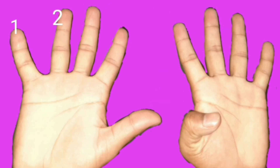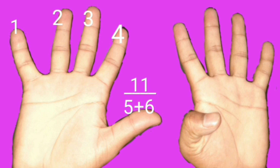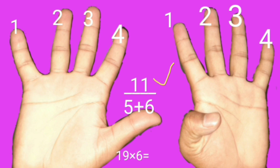Five fingers are on the left side of the bent finger. Five's next digit is 6. 5 plus 6 is 11. Now we count how many fingers are on the right side of the bent finger: 1, 2, 3, 4. So left side 11 is there and right side 4 is there. So 19 times 6 is 114.